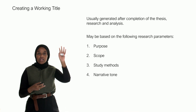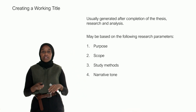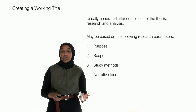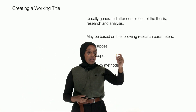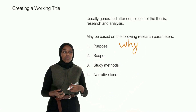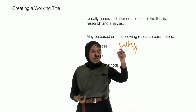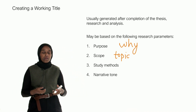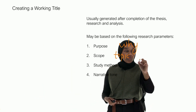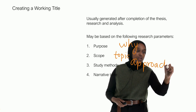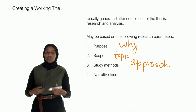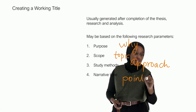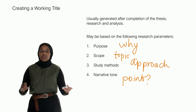To create a working title, you need to generate it completely at the end — after you've identified your storyline and your headliner point. There are four parameters you might want to base your title on. First is the purpose: the 'why' — why are you doing this study, the background. Second is the scope: the topic. Third are the study methods: your approach. Fourth is a narrative tone: going straight to the point, stating exactly what the result is.